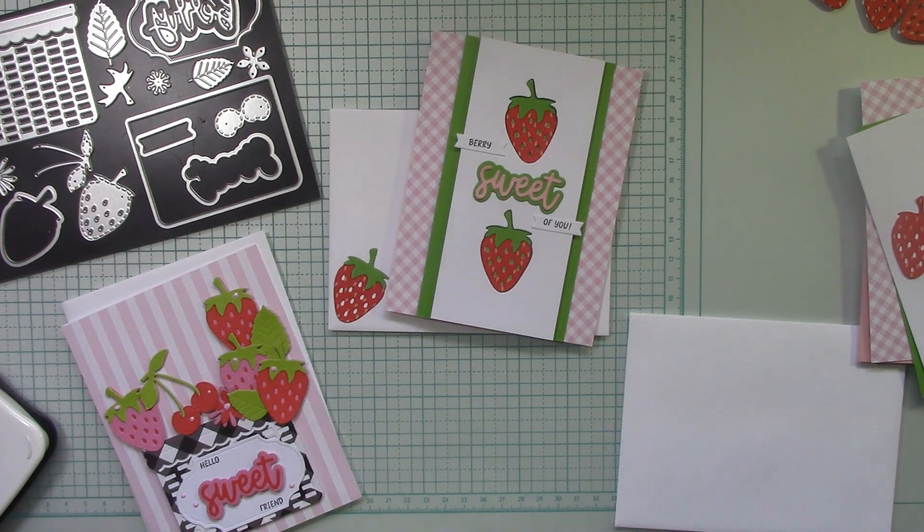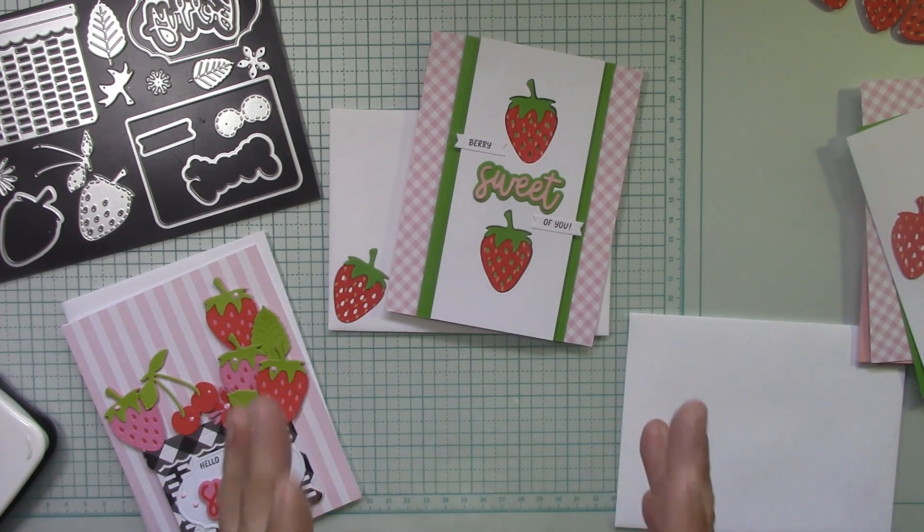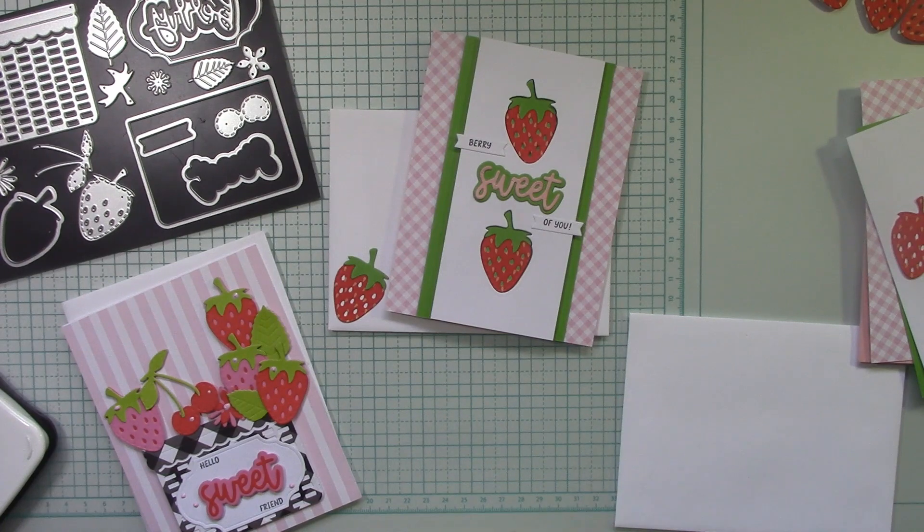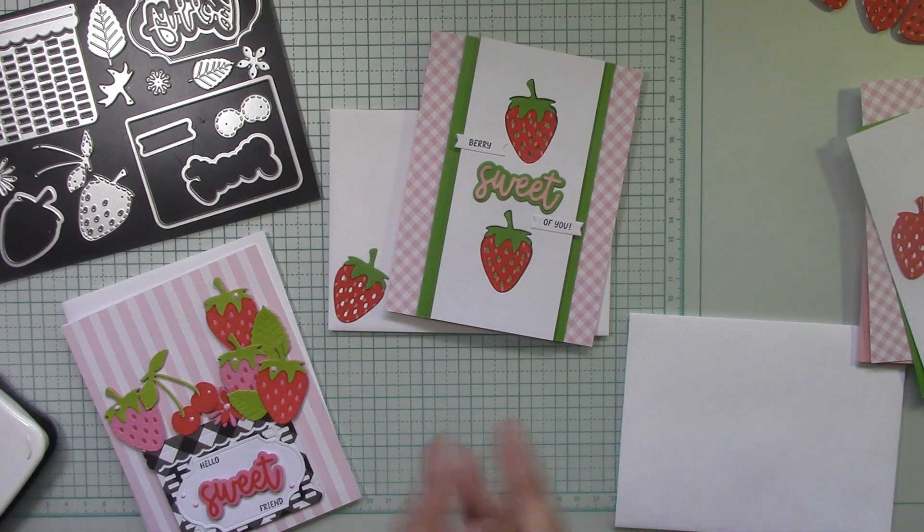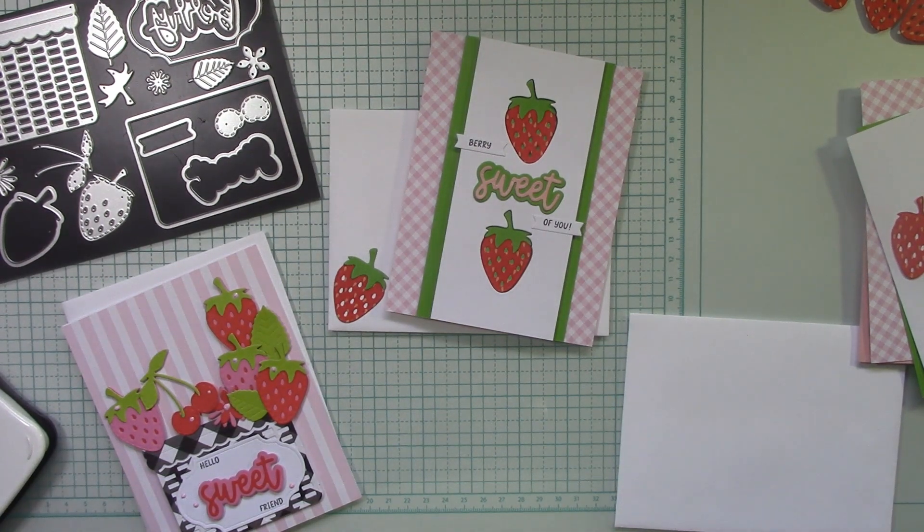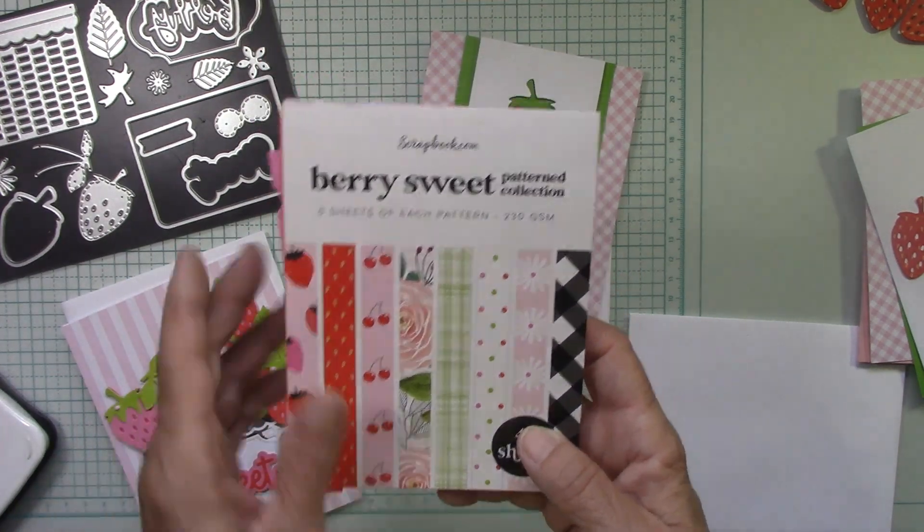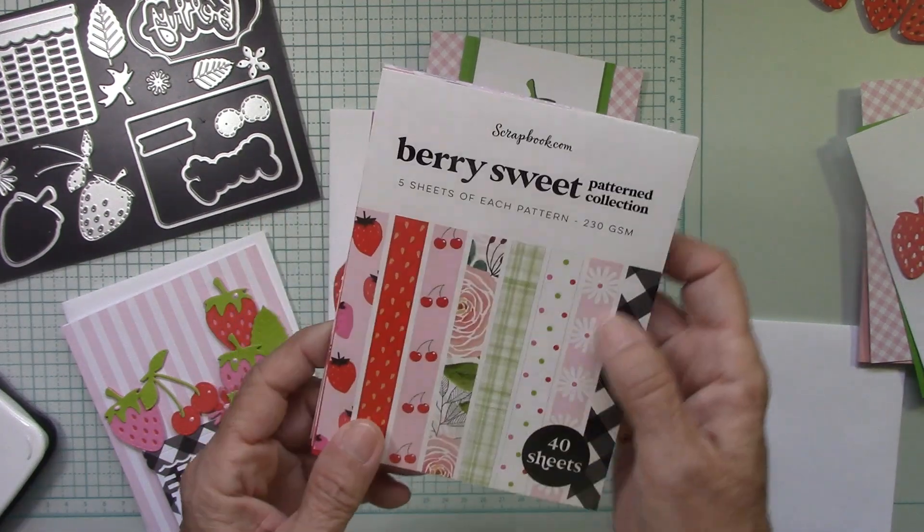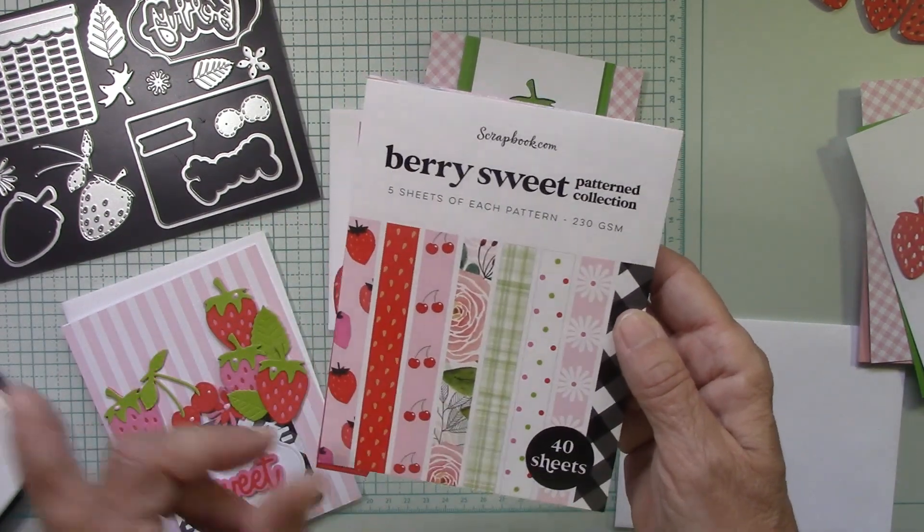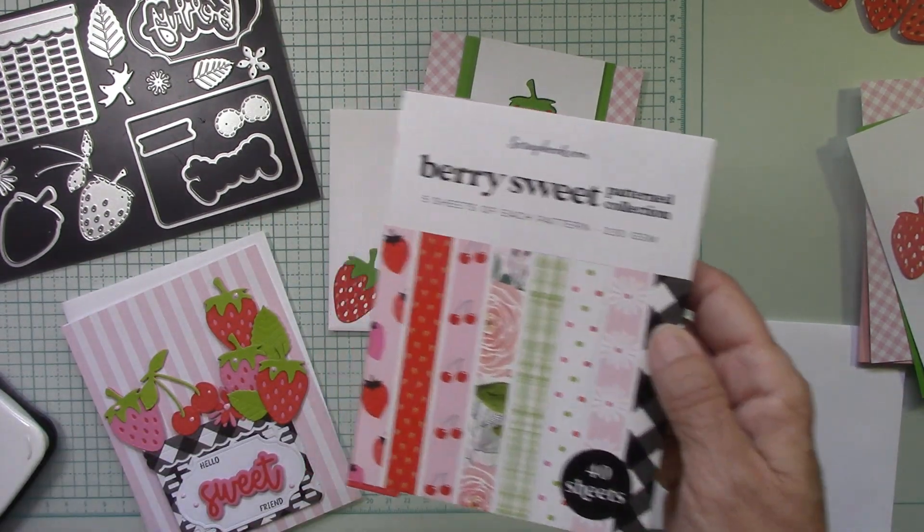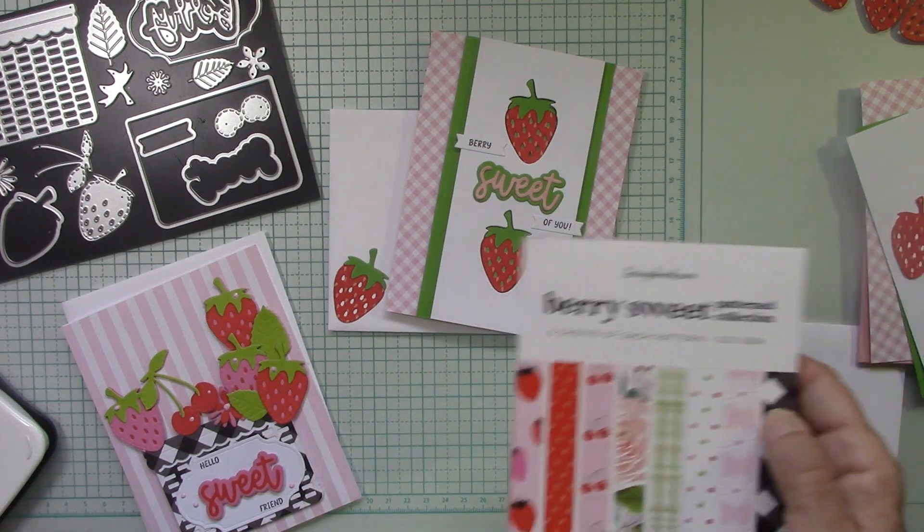Hello everyone, I'm Joanne and welcome to my craft room. Let's have some fun with this wonderful berry sweet collection from scrapbook.com. Now I looked on the website and the paper is sold out. You'll want to click the notify me and it's going to come back in at a great price. When it comes back in they will send you a text or an email. But you can still get the stamp set and the dies.